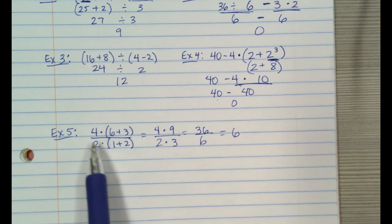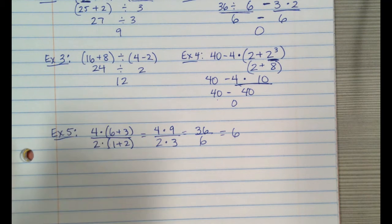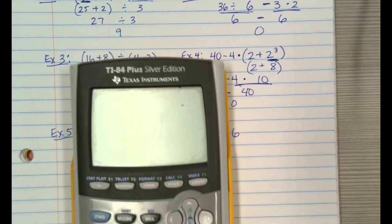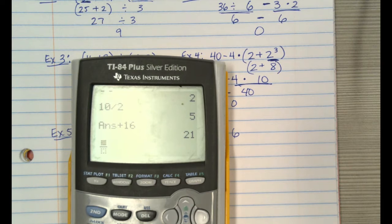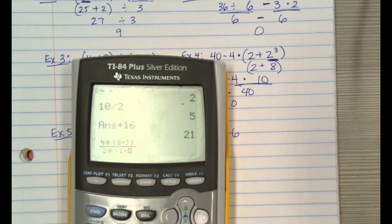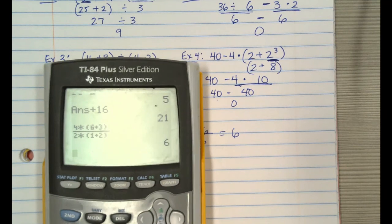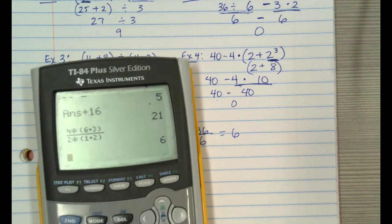If you type this in the calculator just like it looks, using the fraction key — alpha, y equals — you can type that whole problem in just like it looks: 4 times (6 plus 3) over 2 times (1 plus 2), and it will give you the same answer. I'm just asking you to use a calculator to check yourself.